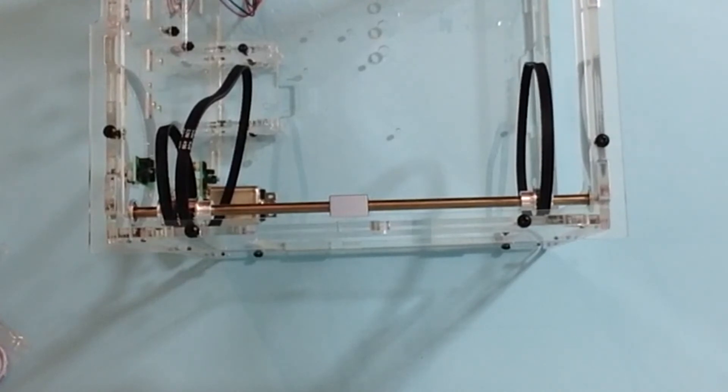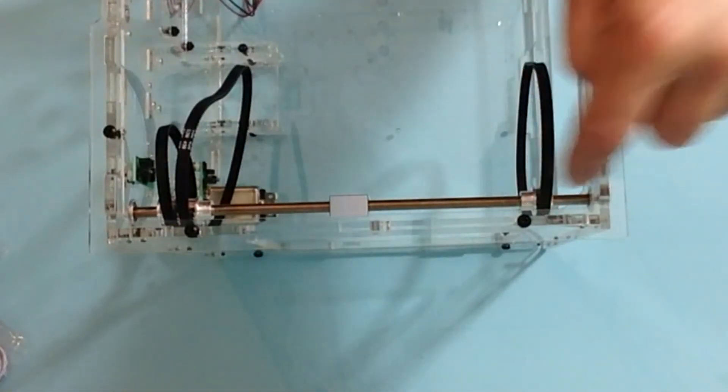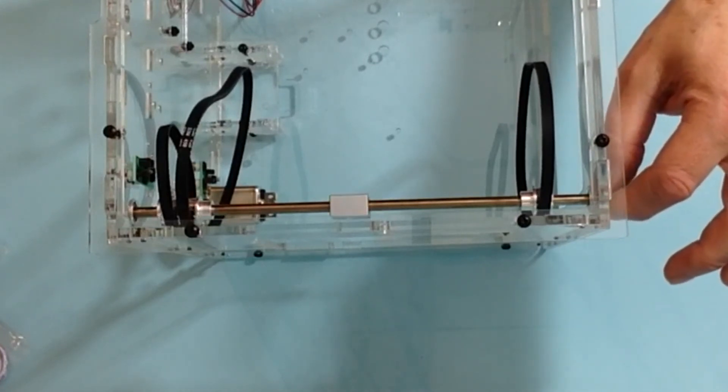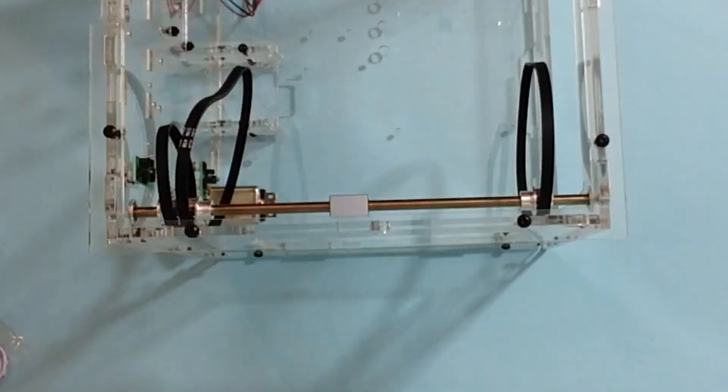Once you've done that, the longer screw that you put on the short pulley side you'll notice will stick out a little bit. That is intentional because there is another part that will be adding to this side at a later stage.